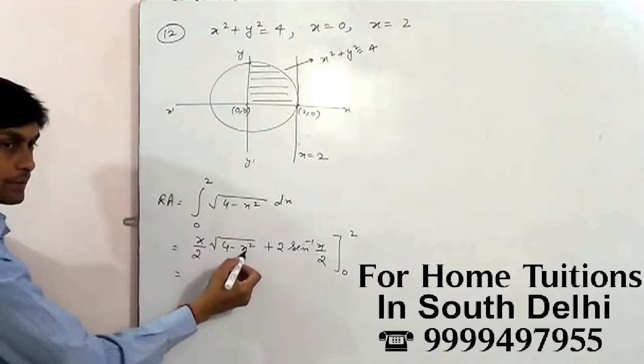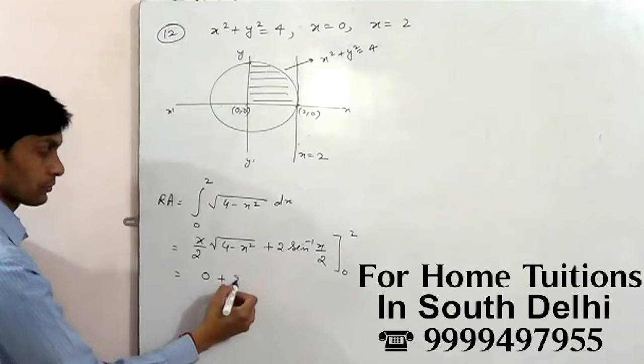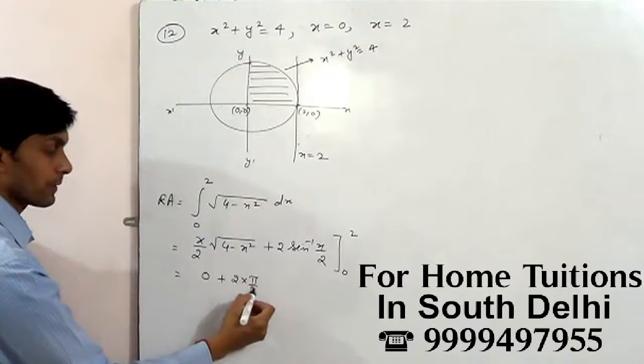We'll substitute here, so this is 0, then 2 by 2, pi by 2 minus 0.